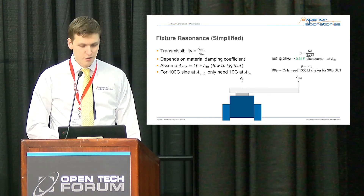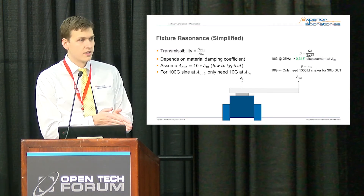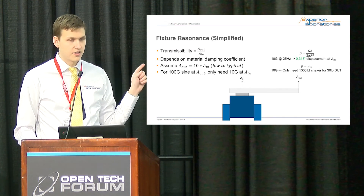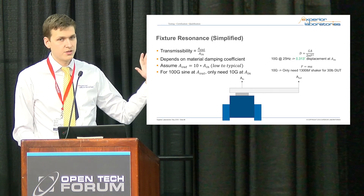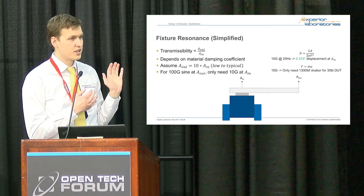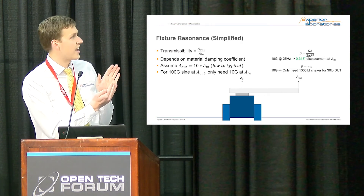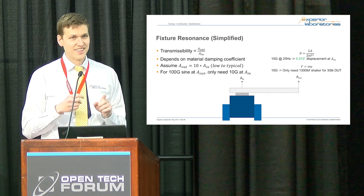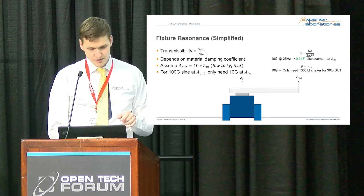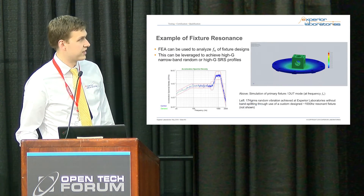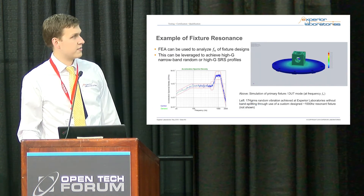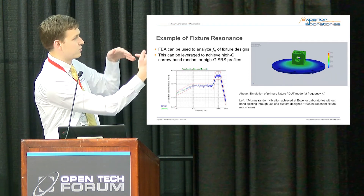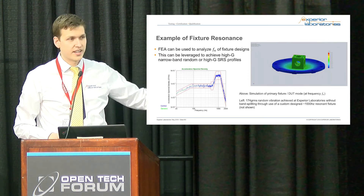That's a simplified overview of how we use fixture resonance in our lab. One way you can use it is for high G narrowband random profiles — all the energy is concentrated in a specific frequency range. If you design the resonant frequencies of your fixture and part to lie in that range, you can get better performance out of the shaker than the manufacturer's spec suggests. The animation shows the primary mode of the plate at the fundamental frequency, with secondary modes twisting — the fundamental is where we get the highest transmissibility.